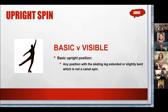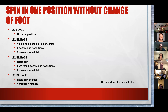This brings us to the levels you can get when going into a spin. If you're doing a spin in one position without a change of foot — for example, an upright spin (USP) or a camel spin (CSP) — with no basic position you won't get any level. A level base requires a visible spin position with two continuous revolutions in that position and three revolutions total throughout the spin. Those two key numbers show up in every spin: two continuous revolutions in the position and a minimum of three revolutions total.